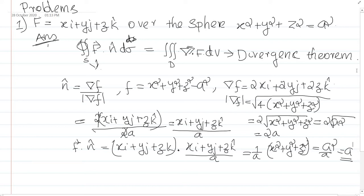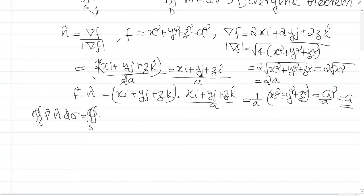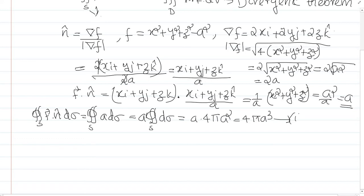Next, the double integral over S of F·n dσ equals the integral of a dσ = a times the surface area of the sphere = a × 4πa² = 4πa³. This is equation number 1.